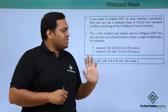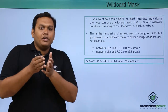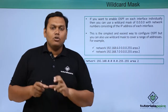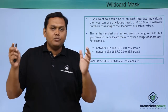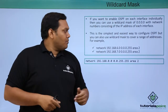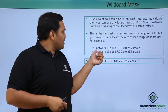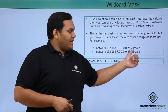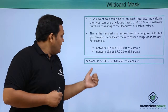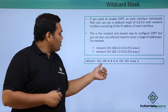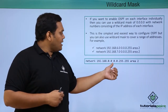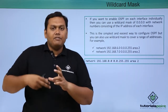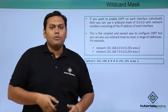This is the simplest and easiest way to configure OSPF, but you can also use a wildcard mask to cover a range of addresses. The syntax is: network [network-number] [wildcard-mask] area [area-id]. For example: network 192.168.0.0 0.0.255.255 area [area], where the area specifies which networks belong to that area.